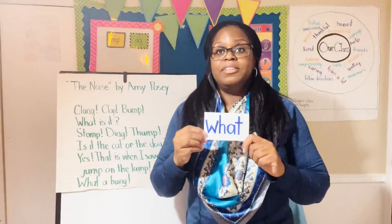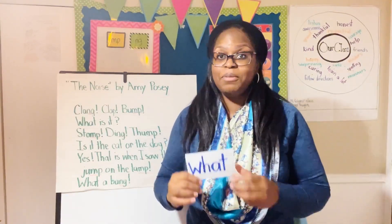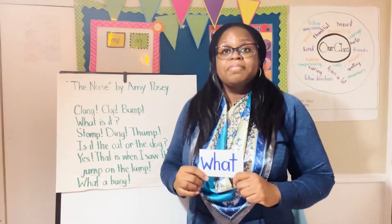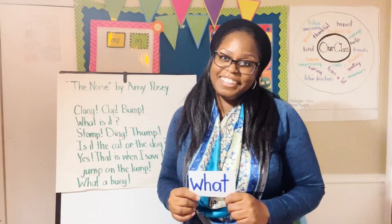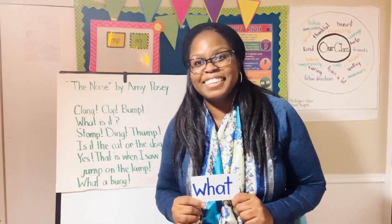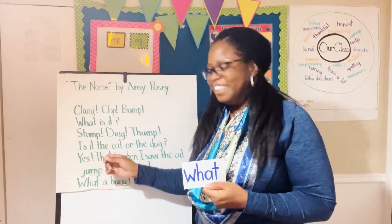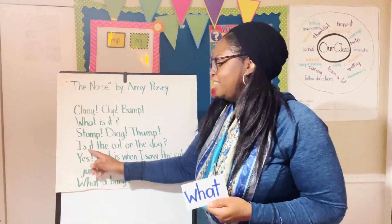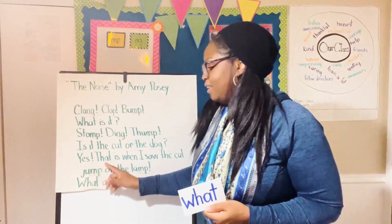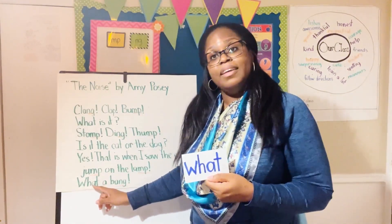Our final word is 'what.' I can feel that my heart rate has increased, so now let's bring it down. When we find the word 'what,' we're going to inhale and exhale and say 'what' — like when you keep asking a trusted adult a question and they say 'what.' Here we go: Clang, clap, bump — what? — what is it? Stomp, ding, thump. Is it the cat or the dog? Yes, that is when I saw the cat jump on the lamp — what? — what a bang! Excellent job, everyone.